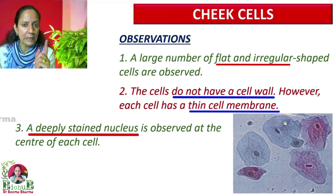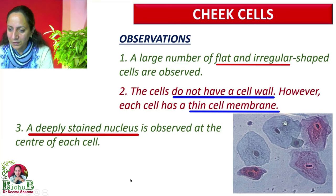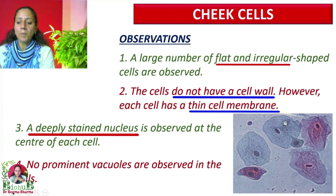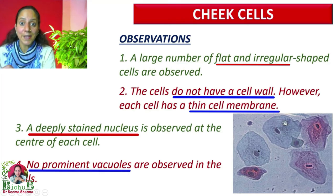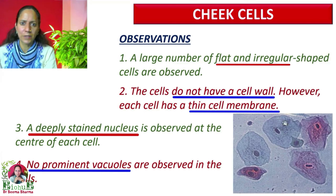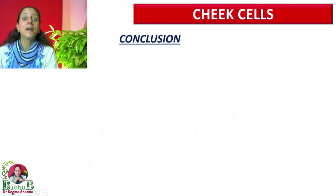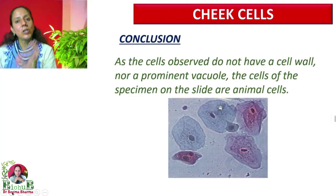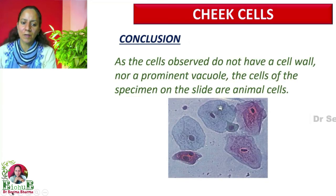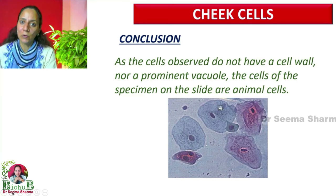A deeply stained nucleus is observed somewhere near the center — not exactly at the center but near the center — of each cell, and it is visible in all the cheek cells. No prominent vacuoles are observed. Since this is an animal cell, vacuoles are either very few or absent. We can conclude: animal cells have a thin outer covering called cell membrane, nucleus is present near the center, and there is no cell wall or large vacuole structures.